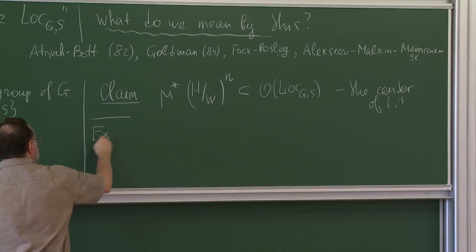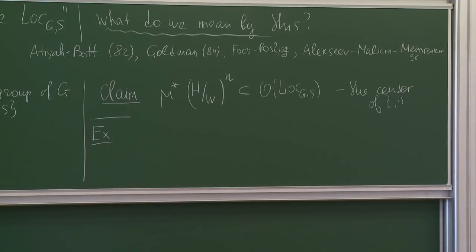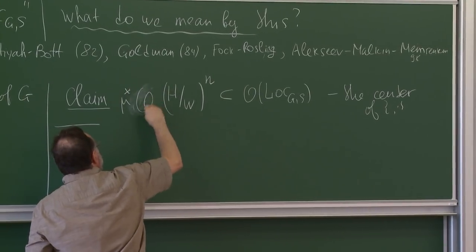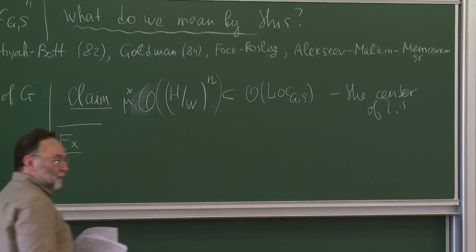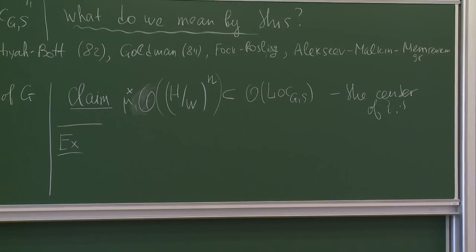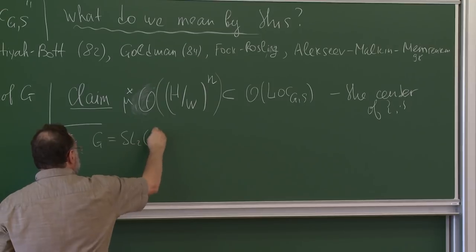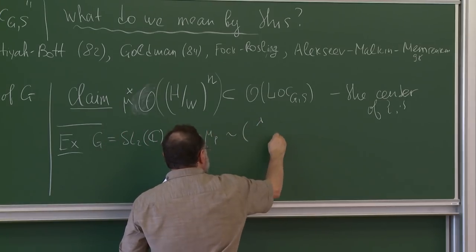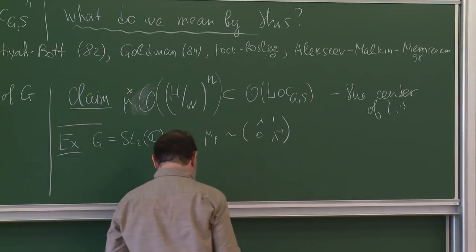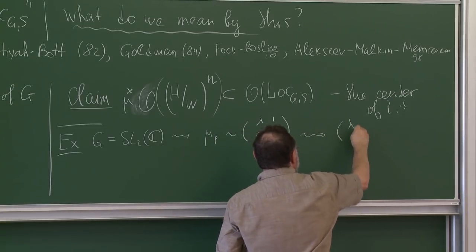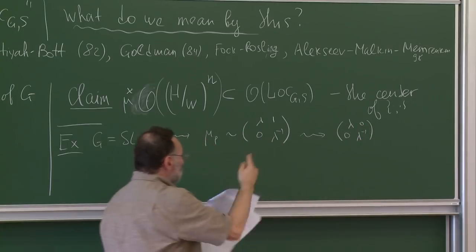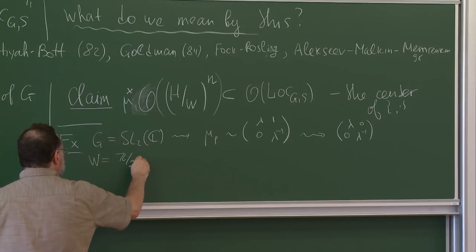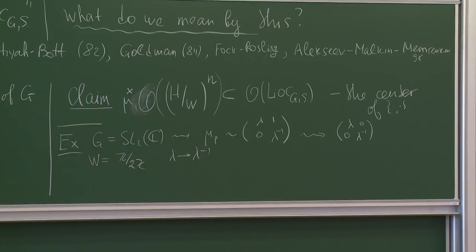For example, if G is PGL(2), and you consider monodromy around a puncture p, it is conjugate to some matrix — typically a Jordan block. The semi-simple part means we associate to this matrix the eigenvalue lambda. The action of the Weyl group means we don't know which one to take: lambda or lambda-inverse. The Weyl group in this case is Z mod 2Z, and it acts by taking lambda to lambda-inverse.